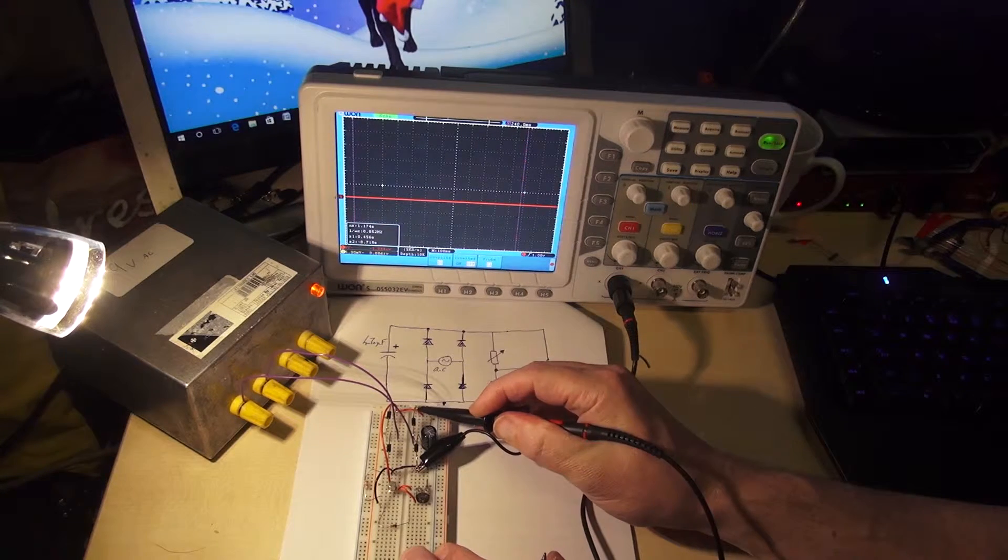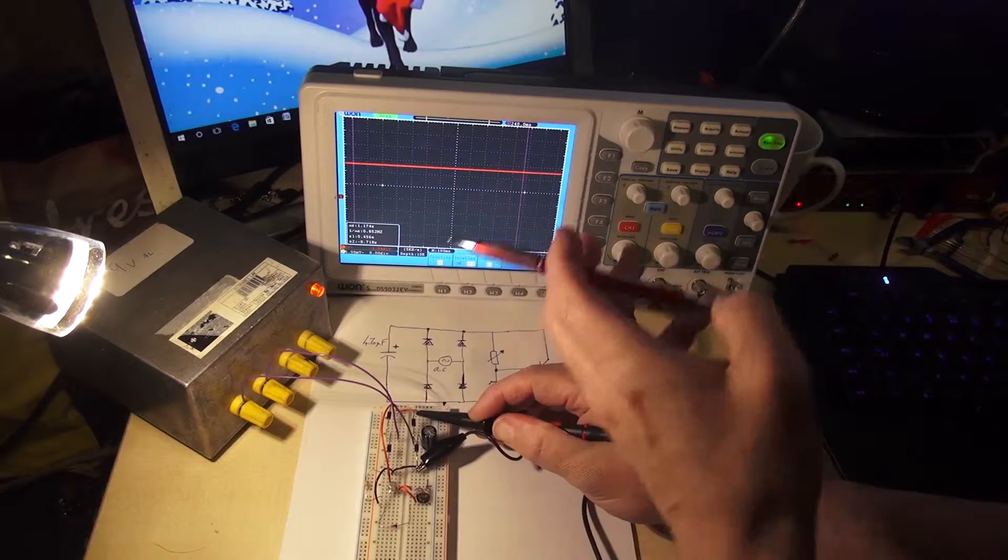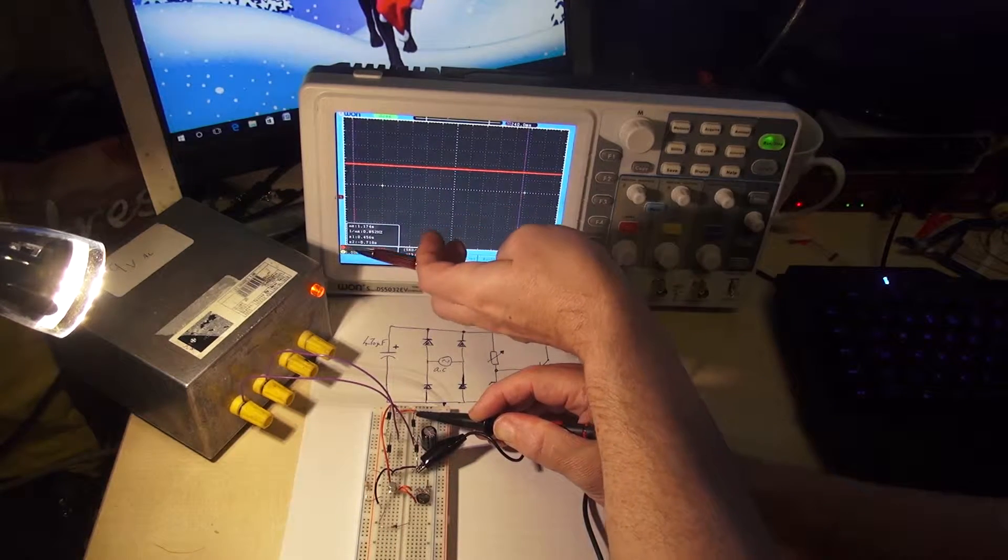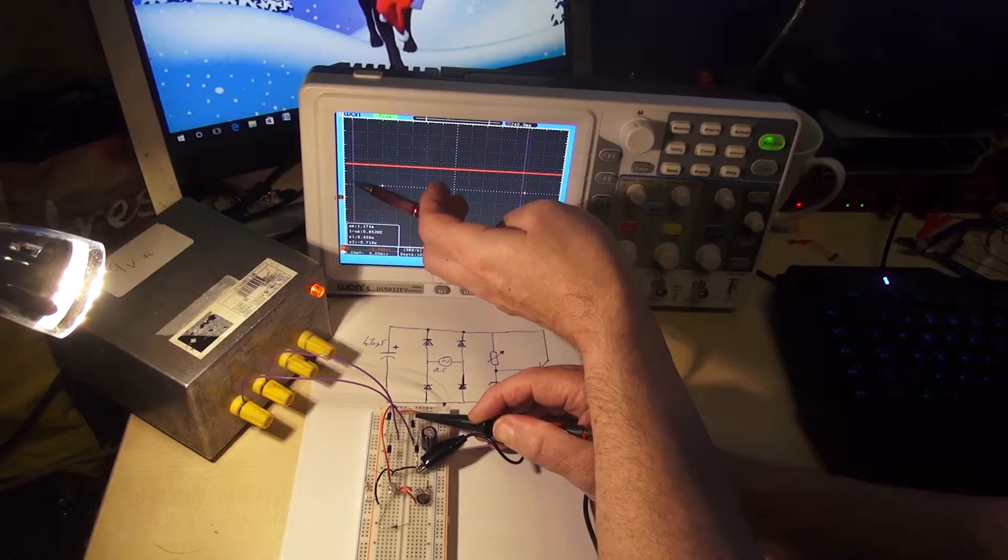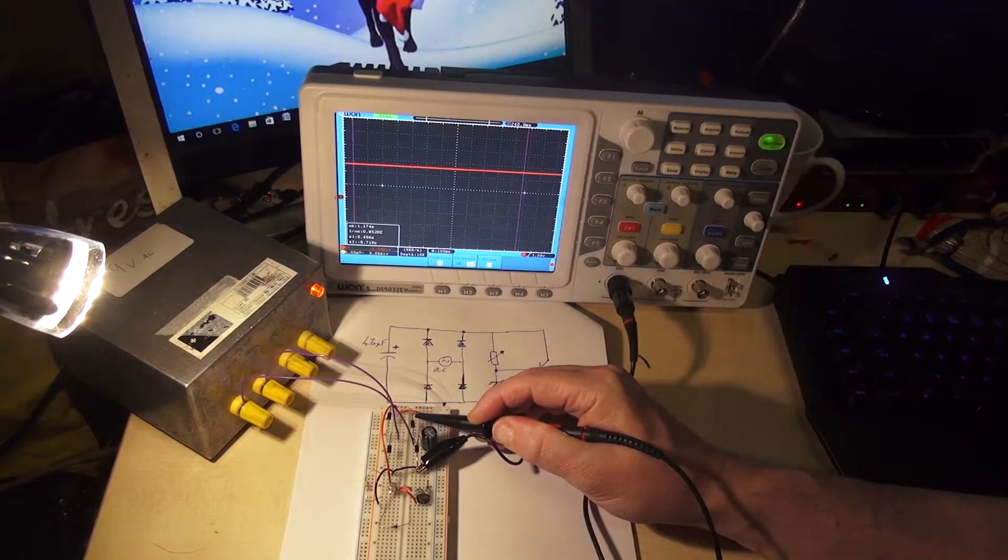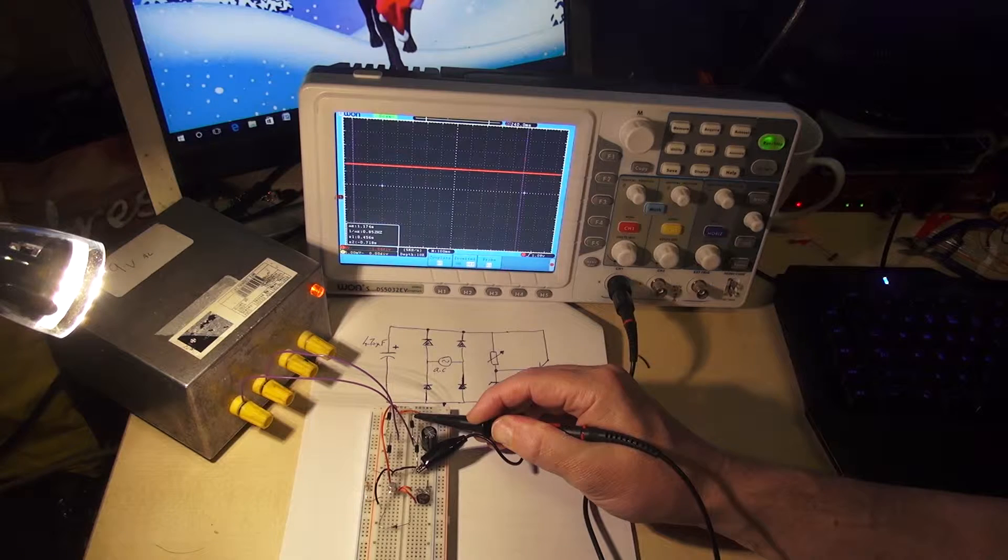If I just pop the output there, you can see it's 5 volts per division and this is the 0 volt line. So we've got an input here, or an output sorry, of the bridge rectifier of about 12 to 13 volts.